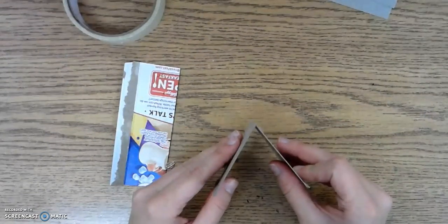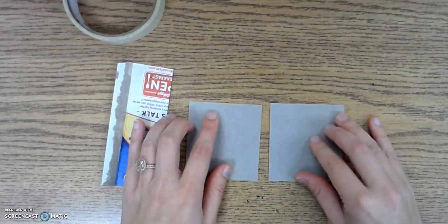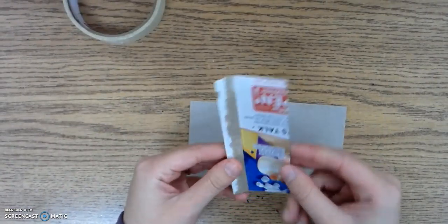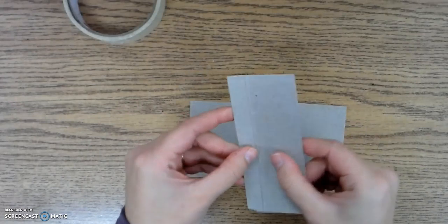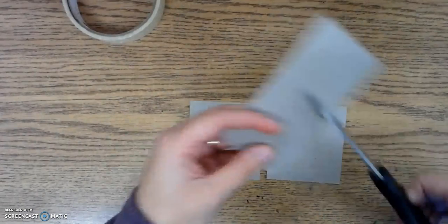That's the first way to add an L-Brace. The second way is by using cardboard instead of just tape. So, I'm going to take another one of those cereal box pieces with the tab. You can kind of see it a little better on this side.